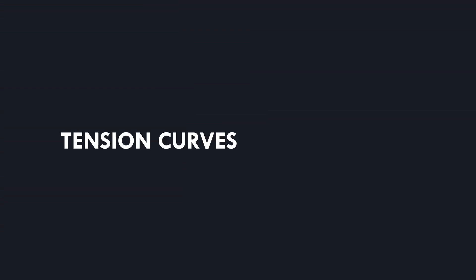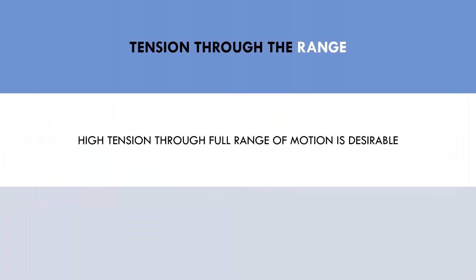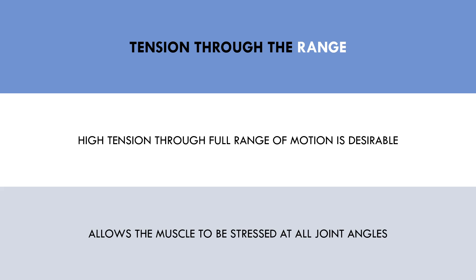So what impact do tension curves have on hypertrophy? The tension curve of the exercise can impact the hypertrophic stimulus of each rep, because the muscles can be more or less stressed through different portions of the range of motion. The first primary consideration is tension throughout the entire range of motion — how much stress is on the muscle throughout the entire repetition. Ideally we want high tension throughout the entire range of motion so that the muscle requires more work at all joint angles. If we only have high tension at certain portions of the lift, then the muscle is only stressed at those particular points. Therefore, it may be beneficial to seek exercises which allow a more evenly distributed tension throughout the entire range of motion.